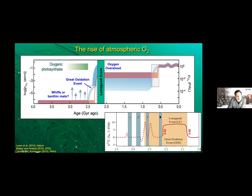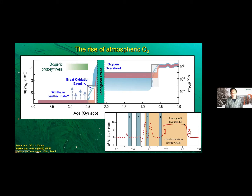I want to focus my talk on the Lomagundi Event. Looking at the figure at the bottom, it's a 160-million-year time episode in which we have this fractionation of carbon isotopes in limestones. Prior to the Great Oxidation Event, limestones forming in seawater were basically flatlined at zero, and after 2.06 it's flatlined right through the present. But in this period between the GOE and the Lomagundi, we see the periodic rise in these positive limestone fractionations.